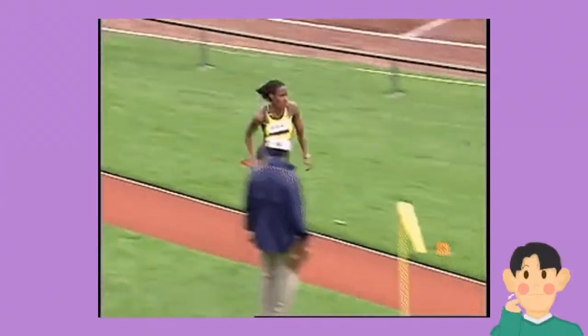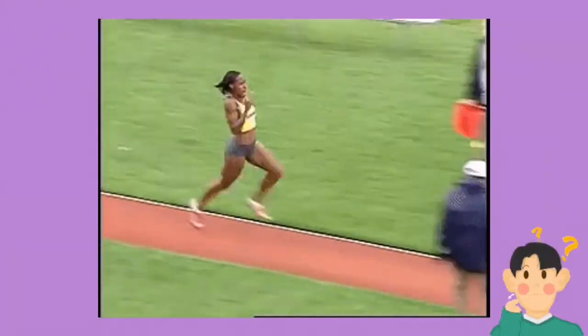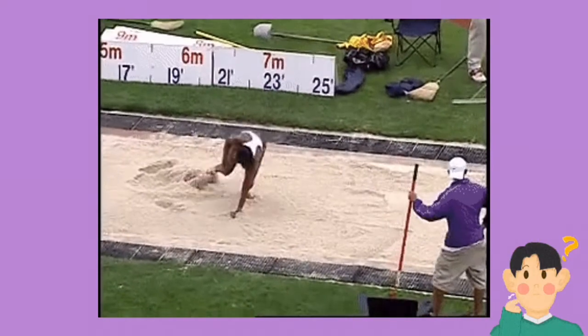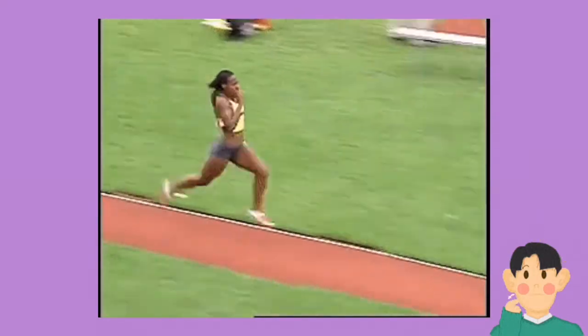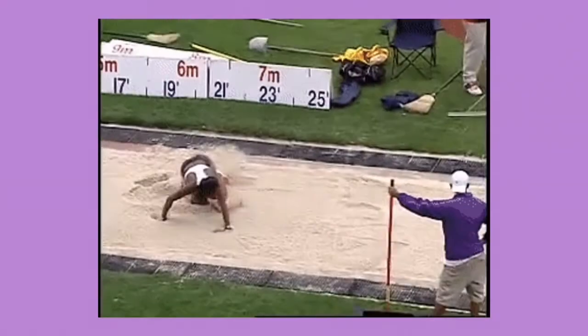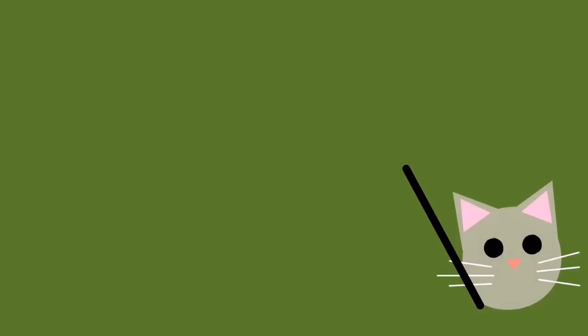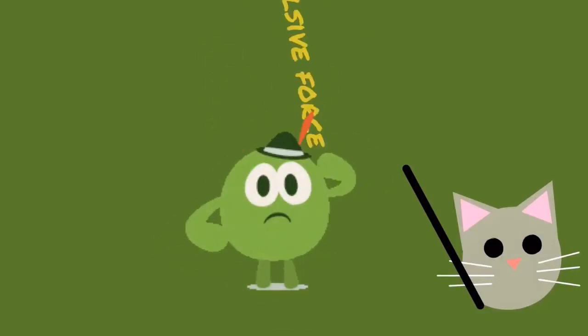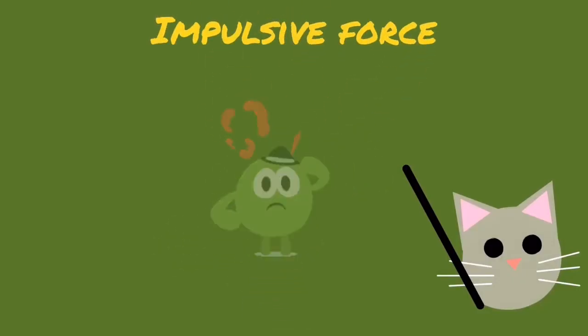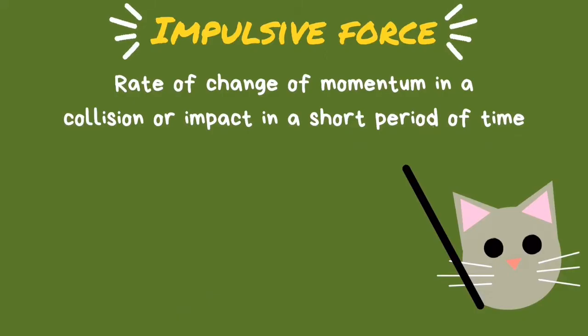Did you guys manage to catch the Olympics recently? Have you ever noticed that when an athlete does a long jump, they will bend their knees right after they did the jump? The purpose of that is to reduce impulsive force. But what exactly is an impulsive force? Impulsive force can be defined as the rate of change of momentum in a collision or impact in a short period of time.